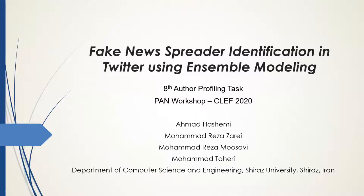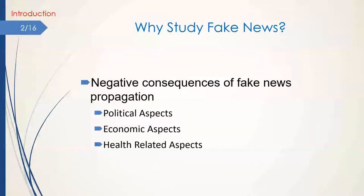We propose a combinational model to utilize various types of features for the purpose of fake news spreader identification. With the rise of social media in the past decade, people have increasingly tended to seek out news from social media services rather than traditional news organizations. The easiness of publishing content in social media has led to an increase in the amount of misinformation that is published and shared. This propagation of fake news is causing several negative consequences in different aspects. For example, researchers have shown the influence of fake news propagation on politics such as election outcomes, and on economy like the stock price.